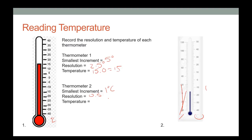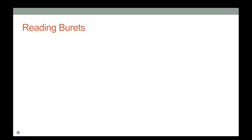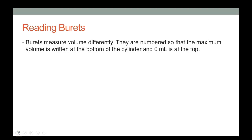That means I need a number in the tenths position. Looking at it, I'd say it's about negative 15.5 degrees. What's most important isn't getting the exact correct answer — it's making sure you have a number in the correct decimal place. Burettes are the last device you'll use.